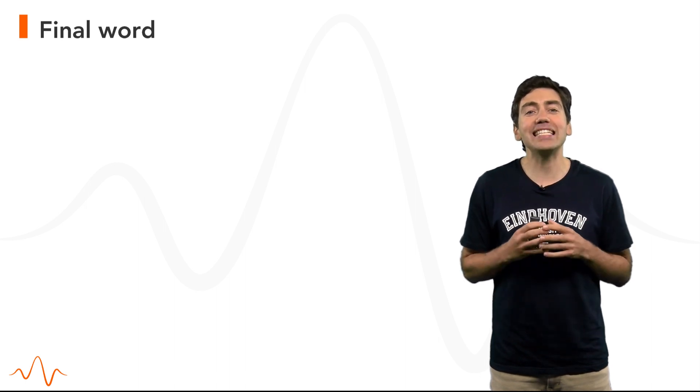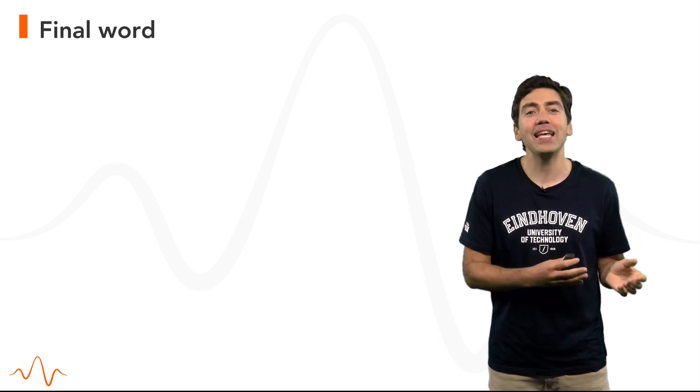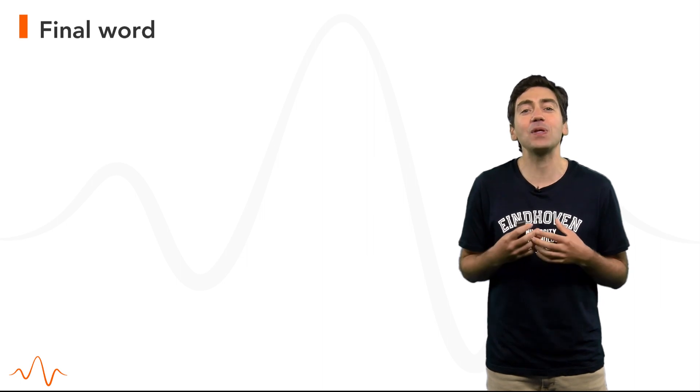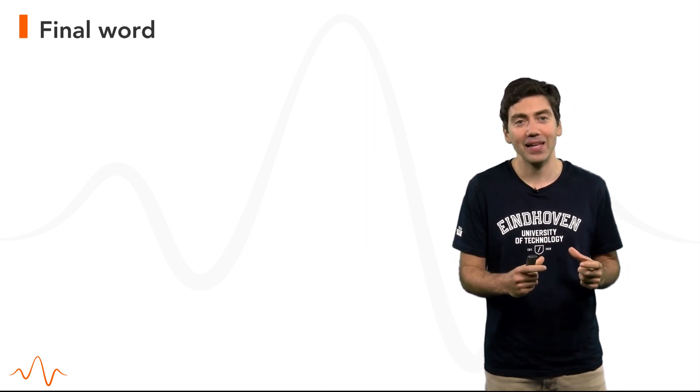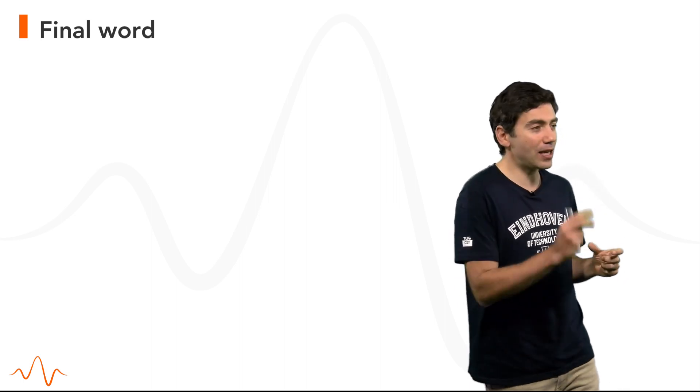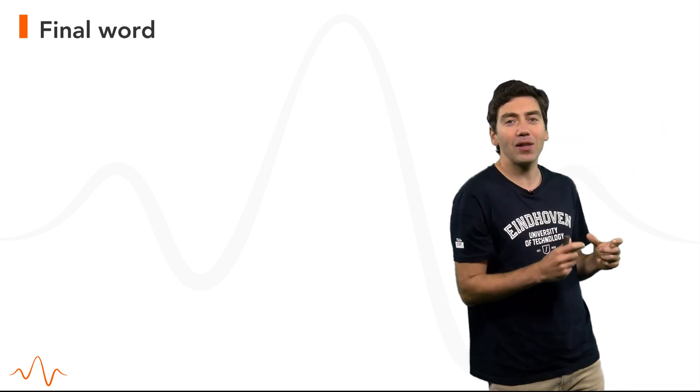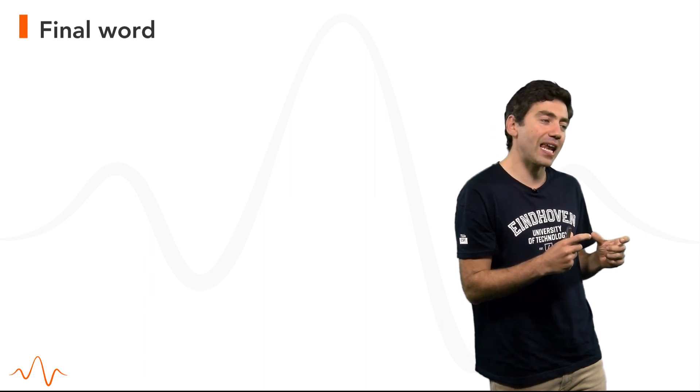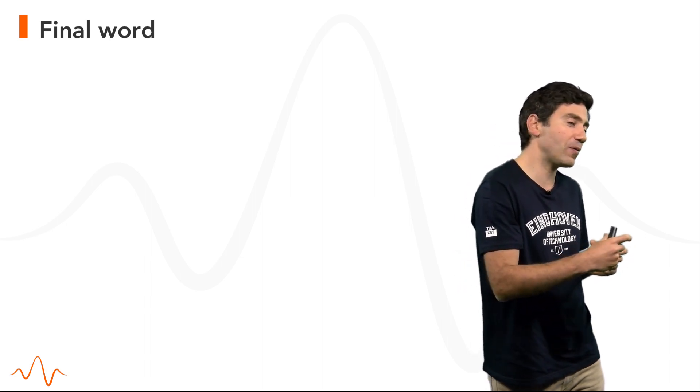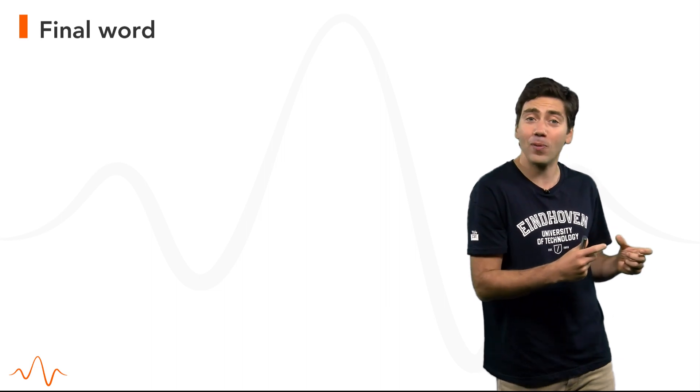When we started the course we made this analogy between the Fourier transform and the transformation that we could do when we are remotely piloting a quadcopter. Especially the rotation so that our nose is aligned with the nose of the quadcopter is very important and it allows us to understand whether we should turn left or right and by how much.